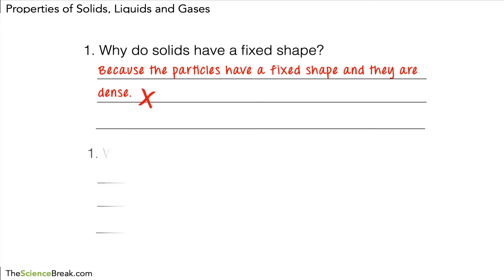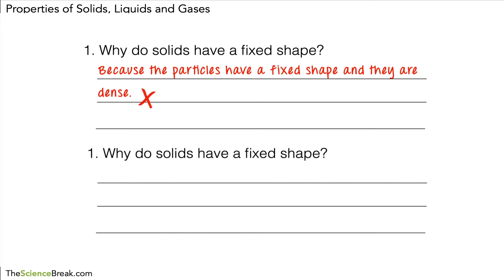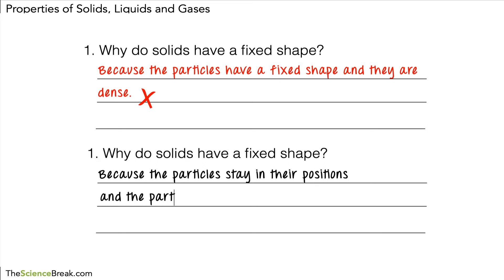So that answer would not score. A better way to put it: solids have a fixed shape because the particles stay in their positions and the particles do not move freely. In this way you are relating the property of the solid — the fixed shape — to the way the particles behave. This would score a mark.